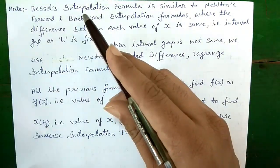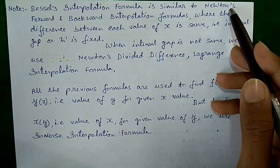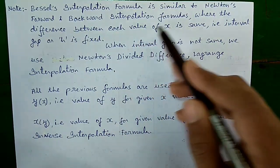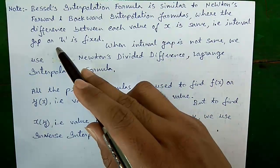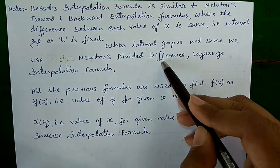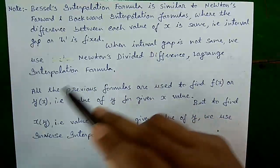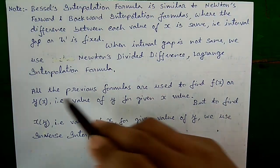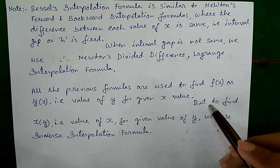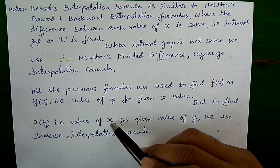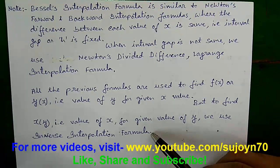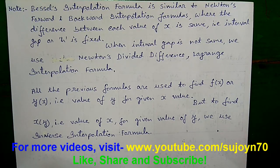Some notes: Bessel's interpolation formula, like Newton's forward and backward interpolation formulas, requires that the interval gap h between each x value is fixed. When the interval gap is not the same, we use Newton's divided difference or Lagrange interpolation formula. All these formulas find f(x) for a given x. To find x for a given y value, we use inverse interpolation. Links to all related methods are in the video description.